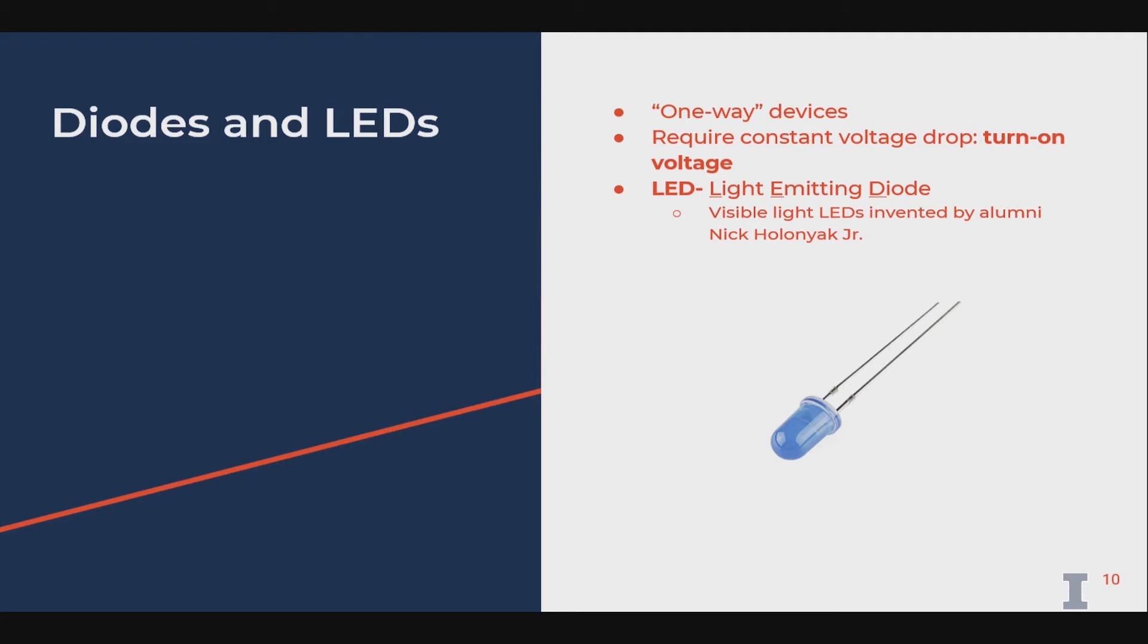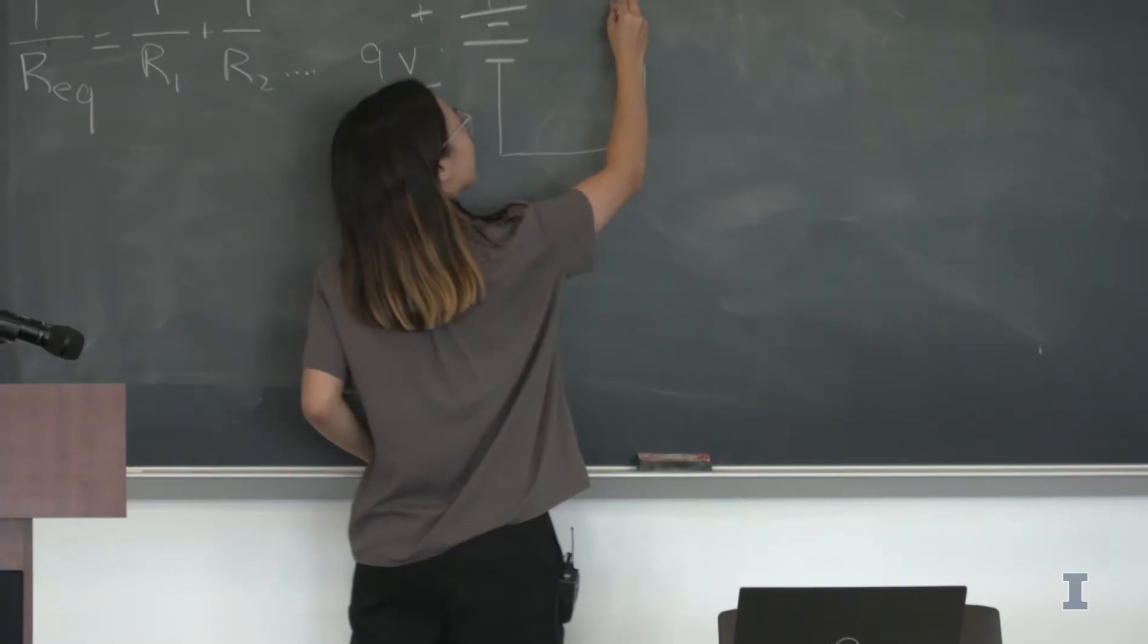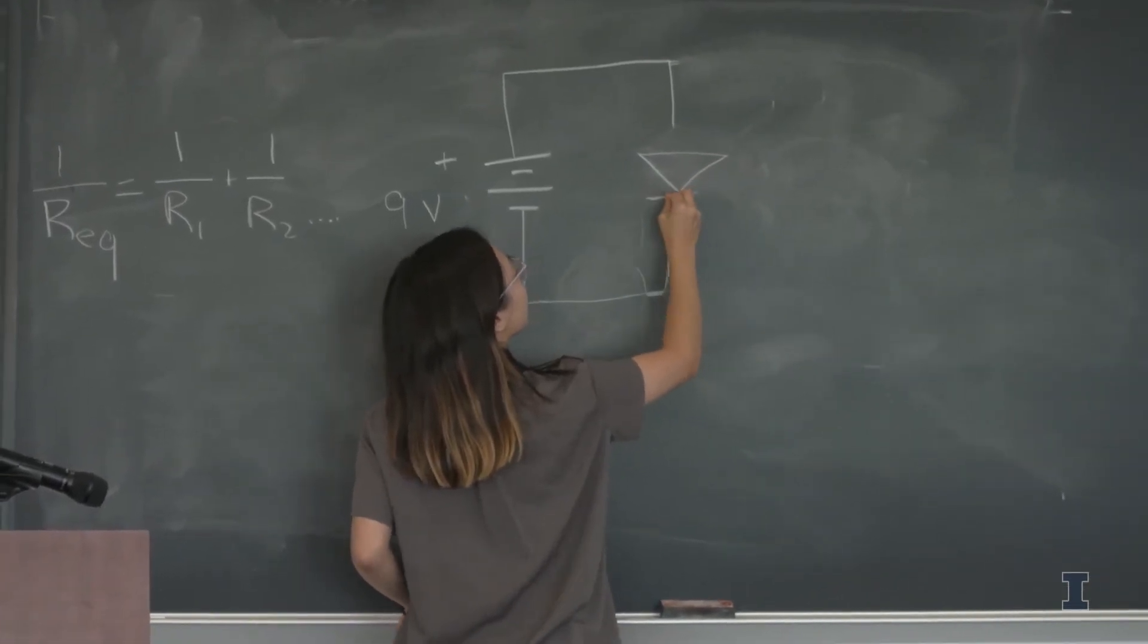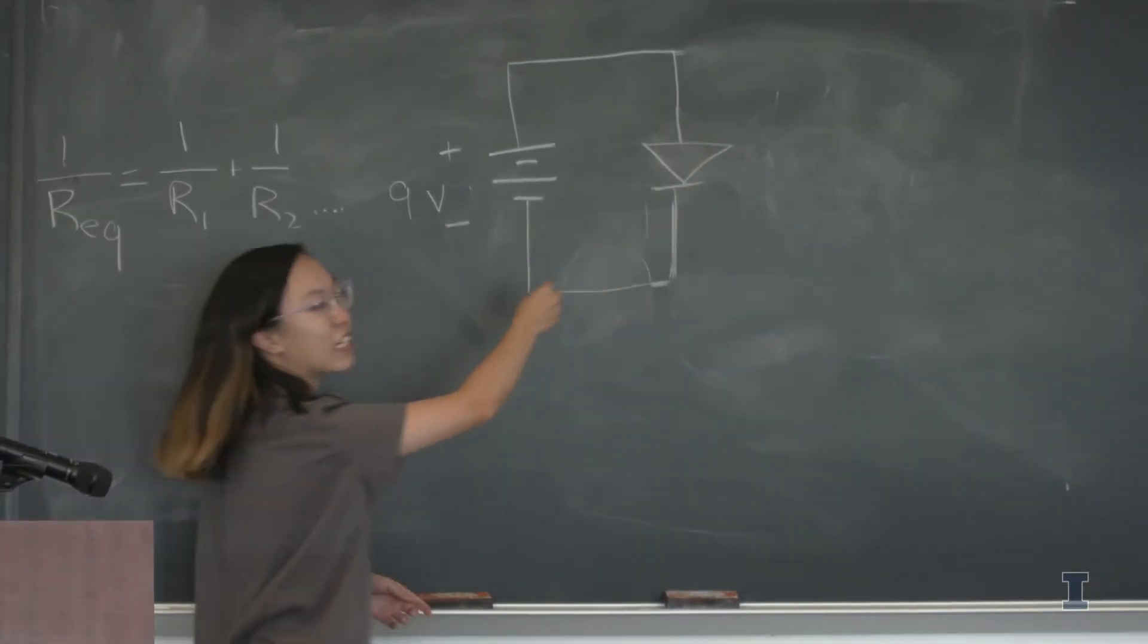Diodes are basically one-way devices. The way we draw diodes in terms of diagrams is like this triangle with this little line at the bottom of it.